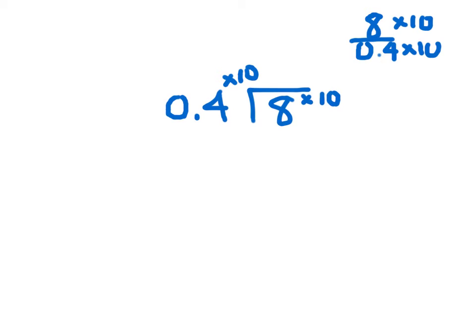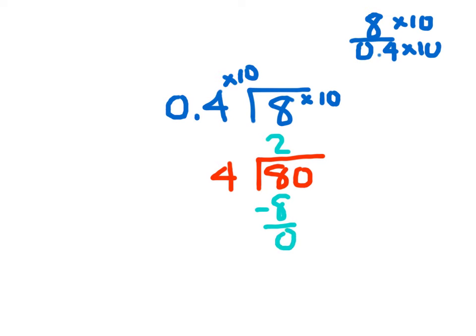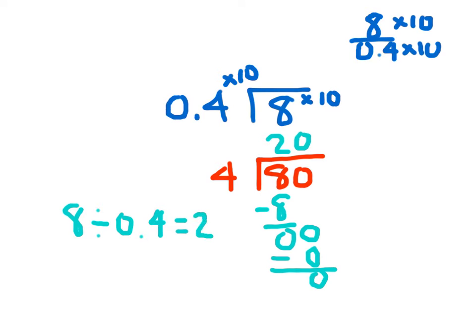As you see here, 0.4 times 10 gives me 4, and 8 times 10 is 80. 4 goes into 8 two whole times. 2 times 4 is 8. 8 minus 8 is 0. Bring down the 0. 0 divided by 4 is 0. 0 times 4 is 0. 0 minus 0 is 0. So the whole number sentence is 8 divided by 0.4 equaling 20.